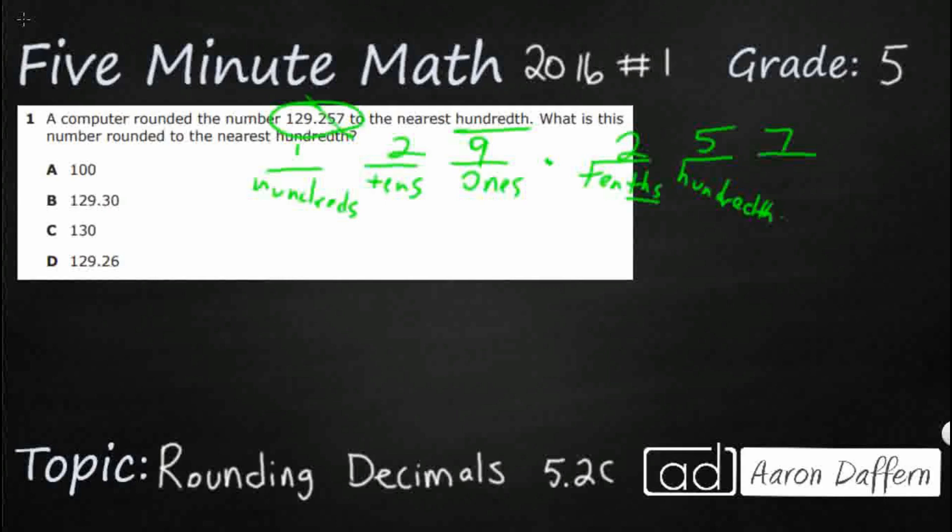like tens, with a T-H-S, hundredths, like hundreds with a T-H-S, thousandths. So you see a mirroring effect here, except for ones. There's no such thing as onceths.